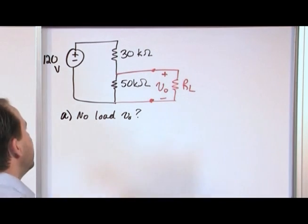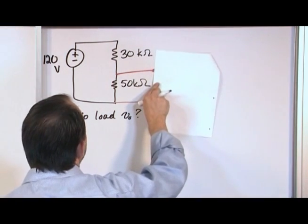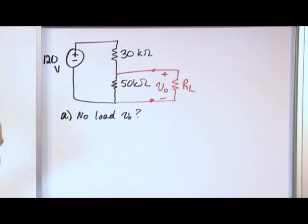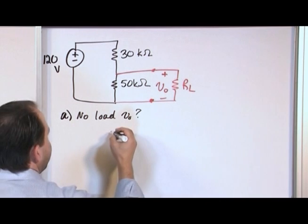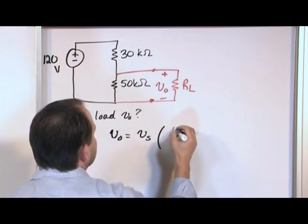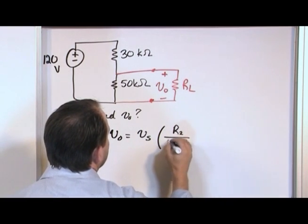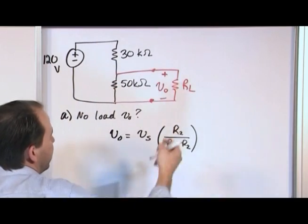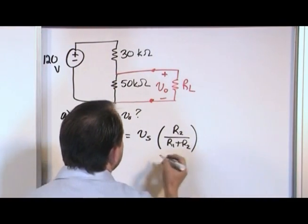So let's just say no load V naught. I'll put a question mark here. So this is simple. What it means is you cover this up. There's no load there at all. You have a voltage divider. You want to know what's the voltage across the 50 kilo ohm resistor. You basically back up and use what we already just said. So V naught is equal to the source voltage times, in this case, it's going to be R2 over R1 plus R2. I'm just kind of saying this is R1 and R2.